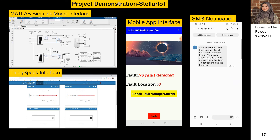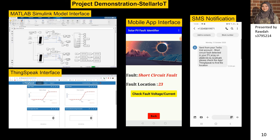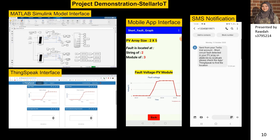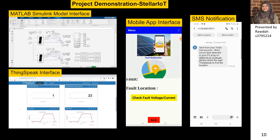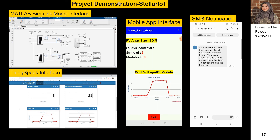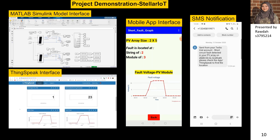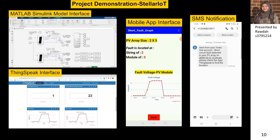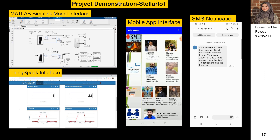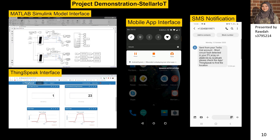Initially there is no fault, but on the occurrence of a fault, graphical analysis is presented on the ThingSpeak interface giving the type of fault as a short-circuit fault on the mobile application, followed by an SMS notification at the particular time of fault, around 12:34 AM. The result is displayed as the fault occurring at string 2 and module 3 of the PV system, presented as tool 3 in both the ThingSpeak interface and the mobile application interface.